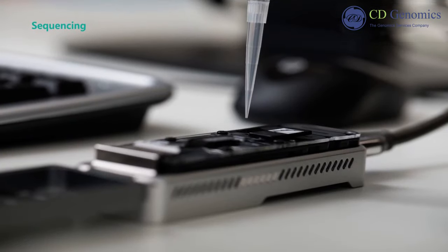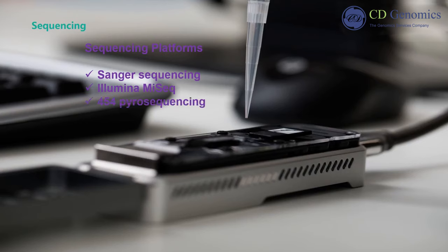16S ribosomal RNA-based sequencing is currently conducted using several technologies, including large-scale clonal Sanger sequencing, Illumina MiSeq, 454-Pyrosequencing that targets specific regions or is linked to barcoding strategies, and PacBio SMRT sequencing.